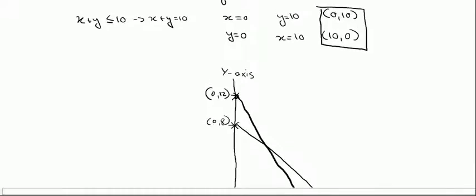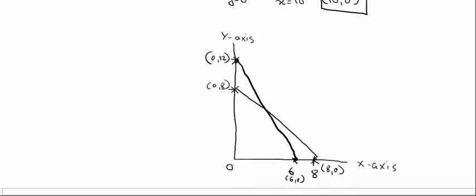The third line passes through (0,10) and (10,0). Since 12 is marked above and 8 below, 10 falls somewhere in between on the y-axis. For (10,0), since 8 is already on the x-axis, 10 will be a bit further out. My third line proceeds from (0,10) to (10,0).